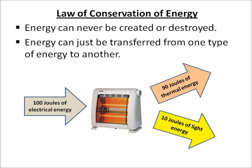This is the law of conservation of energy. Energy can never be created and it cannot be destroyed. Instead, energy is just transferred from one type of energy to another. In the diagram below we've got electrical energy going in and we've got thermal energy and light energy coming out. We can see that the amount of energy going into the heater — 100 joules — is the same as the amount of energy coming out: 90 plus 10.